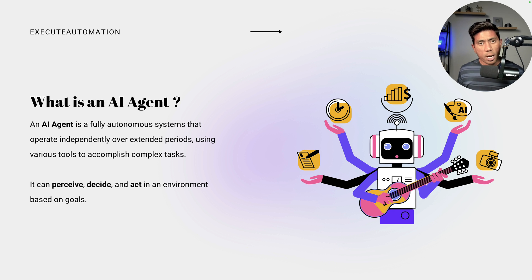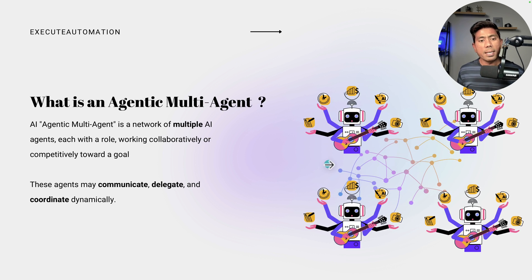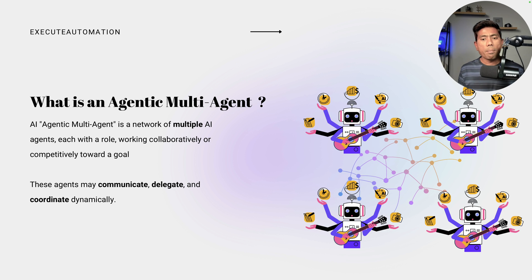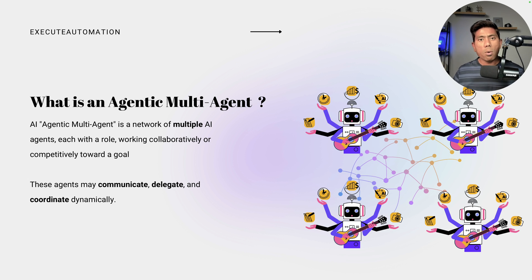We also talked about what an agentic multi-agent system is, which is pretty much like a group of agents communicating to accomplish a task. That is what the multi-agent system really does — they can communicate, delegate tasks, and coordinate among the agents to achieve a specific goal.